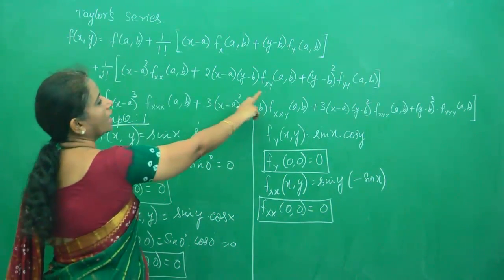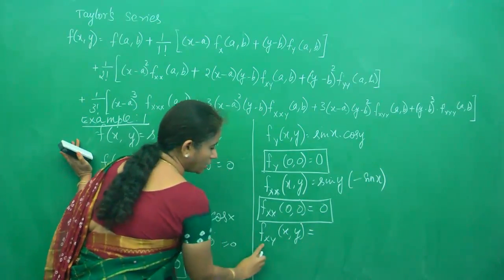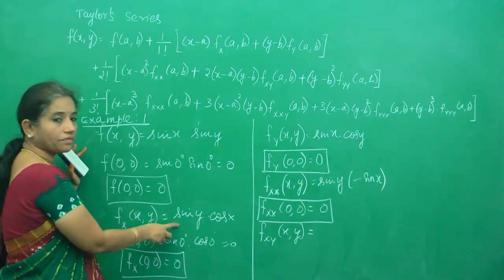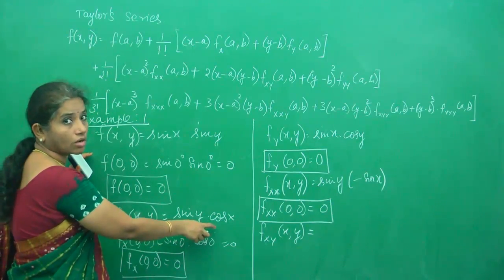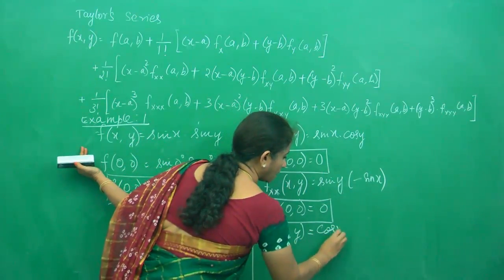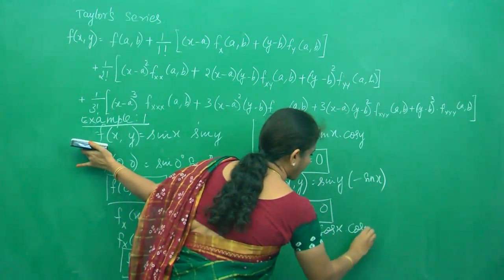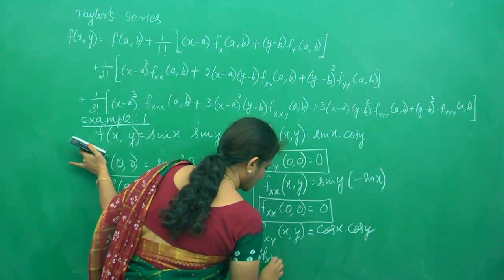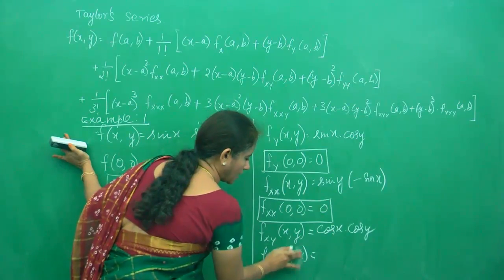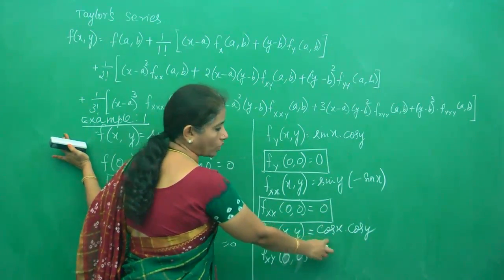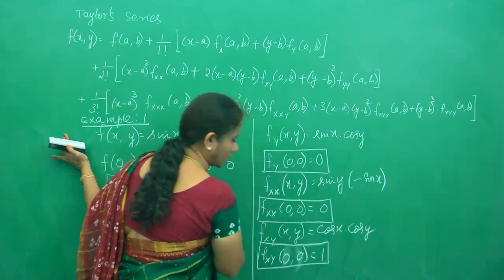Now we are going to do f_xy(a,b). For f_xy(x,y), I take the x-derivative which is sin(y)·cos(x), and differentiate with respect to y. cos(x) is constant, and the derivative of sin(y) is cos(y). So f_xy(x,y) = cos(x)·cos(y). Substituting (0,0): f_xy(0,0) = cos(0)·cos(0) = 1·1 = 1. Draw a rectangle and keep it ready.